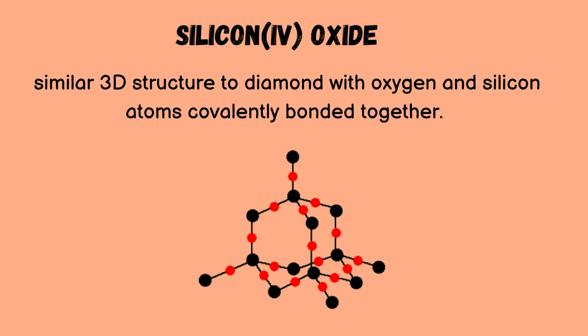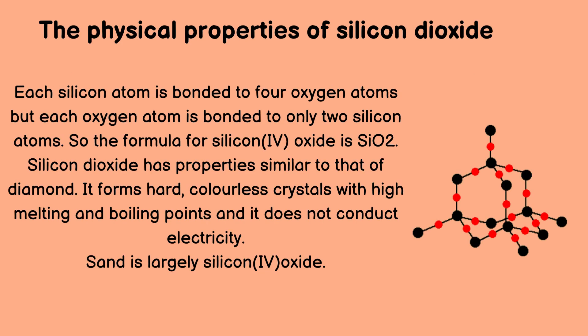Silicon dioxide has a similar 3D structure to diamond, with oxygen and silicon atoms covalently bonded together. Each silicon atom is bonded to four oxygen atoms, but each oxygen atom is bonded to only two silicon atoms, so the formula for silicon dioxide is SiO₂. Silicon dioxide has properties similar to diamond — it forms hard, colorless crystals with high melting and boiling points and does not conduct electricity. Sand is largely silicon dioxide.